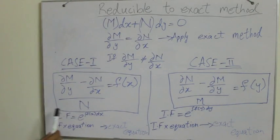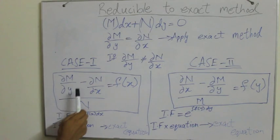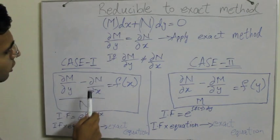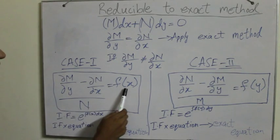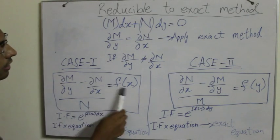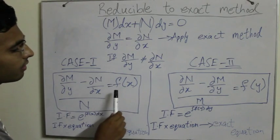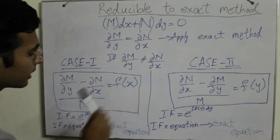Case 1 says that the partial derivative of M with respect to y minus the partial derivative of N with respect to x upon N will give you a function of x only. A function of x only means that you will not have any variable over here besides x.